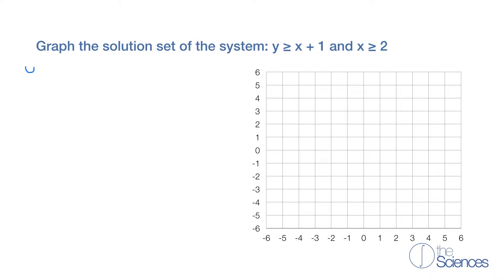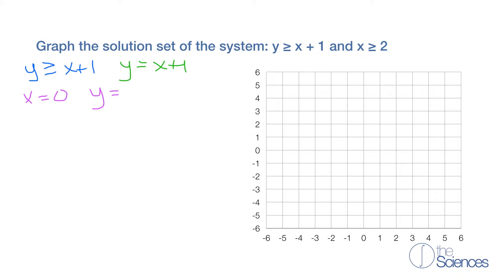So here we have y is greater than or equal to x plus 1. We're going to find our x and y intercepts. We're going to set y equal to x plus 1 and solve for y when x is equal to 0. So we have y equals 0 plus 1, or y equals 1. So our first point would be (0, 1).